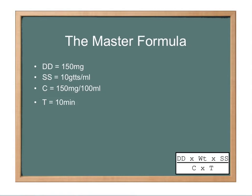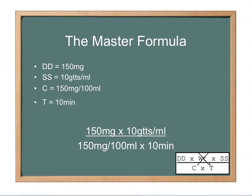Again, it's not a weight-based drug, so we won't need the weight component of the master formula. We can cross that out. So your setup is 150 milligrams times 10 drops per milliliter over 150 milligrams per 100 milliliters times 10 minutes. We reduce our concentration to 1 ml. You end up with 1.5 milligrams per milliliter. All we did was divide both sides by 100.